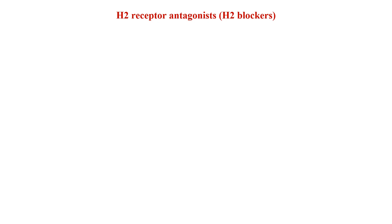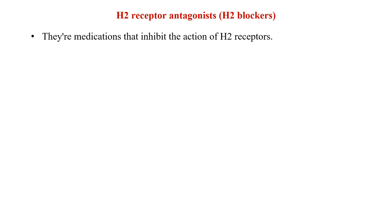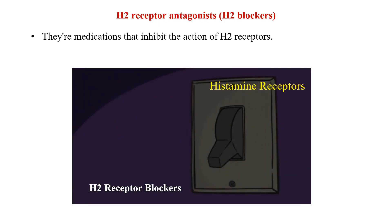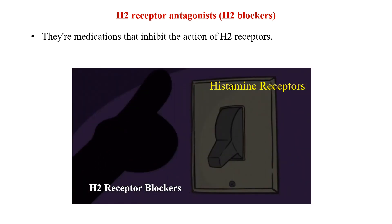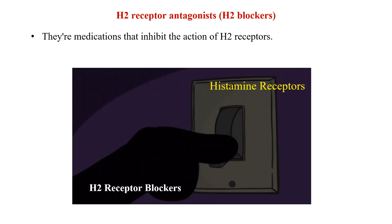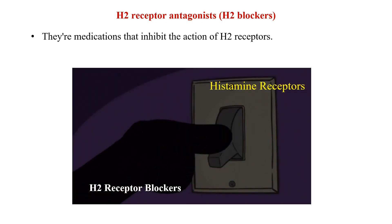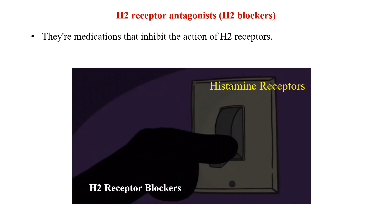H2 receptor blockers are like the superheroes of your stomach. They are medications that inhibit the action of H2 receptors — imagine them as the switch-off for stomach acid production. Now let's have a closer look at how these blockers work.